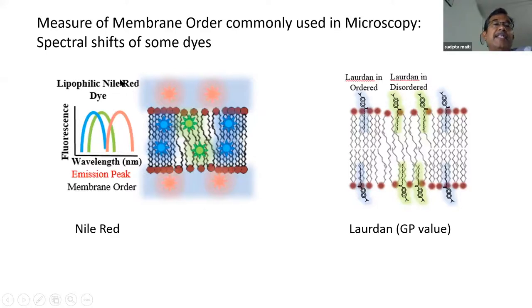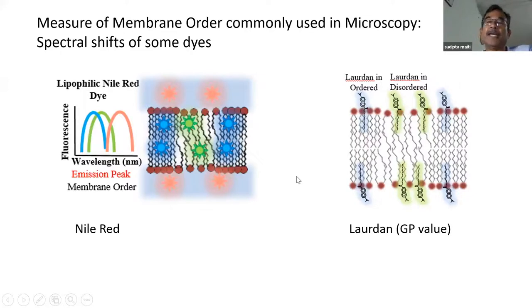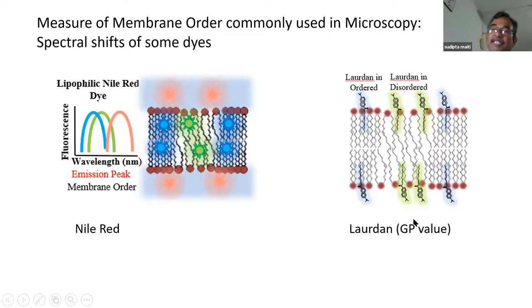A very nice and cheap dye used is Nile Red, or some variants of it. For more quantitative work, people typically use something called Laurdan, which is a lipid tail and a fluorescent group that senses the local order or disorder.